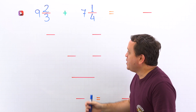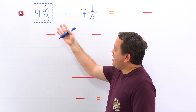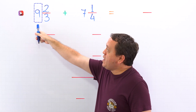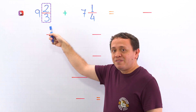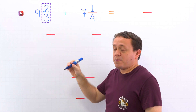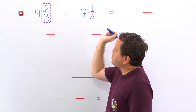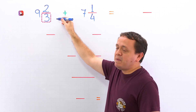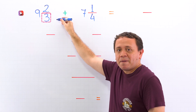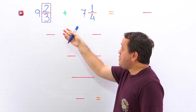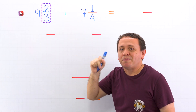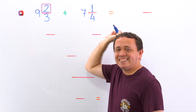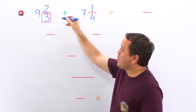Let's start with a quick review. A mixed number, like this one, is the sum of a whole number and a proper fraction. Also, a proper fraction is a fraction where the numerator, the top number, is less than the denominator, the bottom number. For example, two thirds is a proper fraction, given that the numerator 2 is less than the denominator 3.